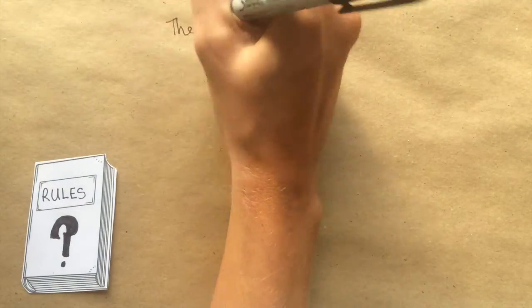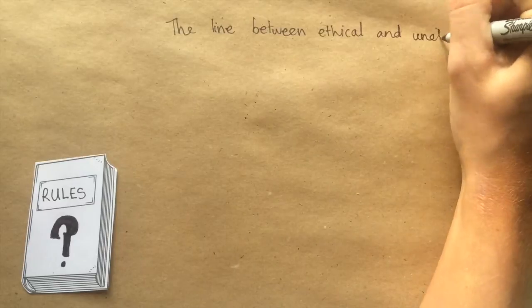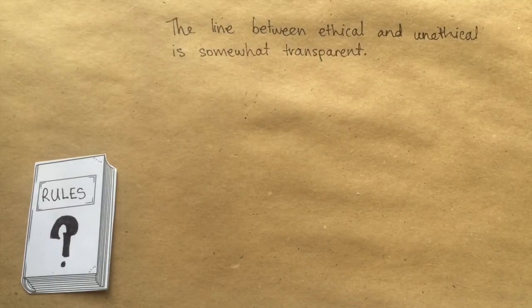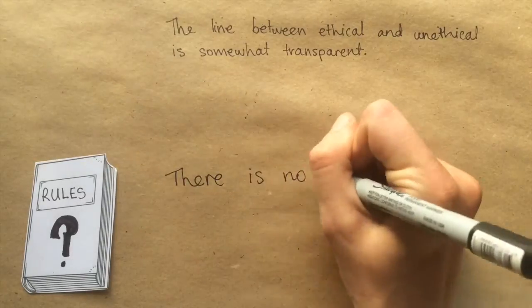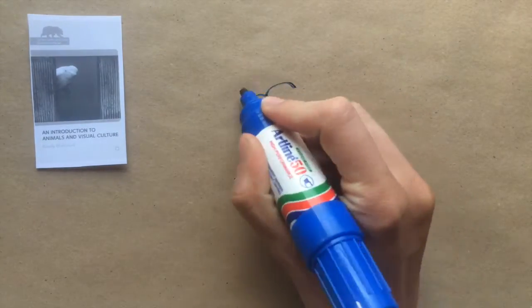As always, the line between ethical and unethical is somewhat transparent, not only because non-human animals have no language we recognize as legitimate, but also because there is no rule book that exists for advertisers to adhere to. In his book, An Introduction to Animals and Visual Culture, Professor Randy Mullamood says,